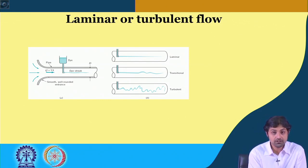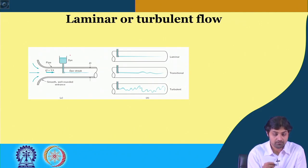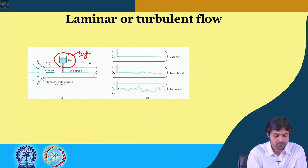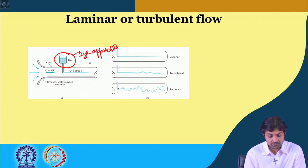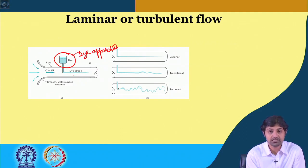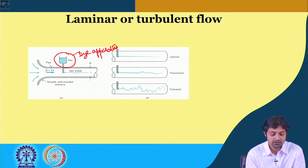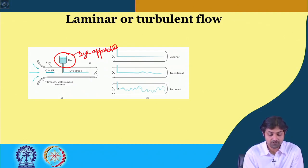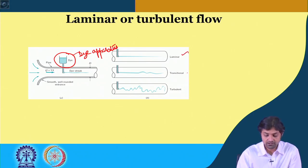Figure A represents a pipe in which water or any liquid is flowing. We have a set for a dye — a colored substance that moves with the liquid velocity. What we do is drop a little bit of dye using this apparatus and with the velocity this dye will start moving. This line which the dye follows is called the dye streak. Figure B is a detailed figure of how this dye streak looks — parts A, B, and C.